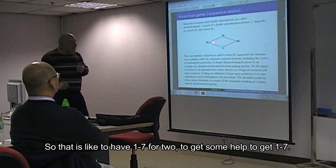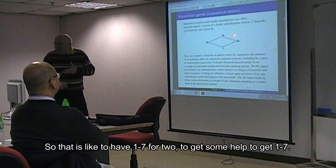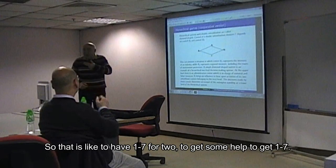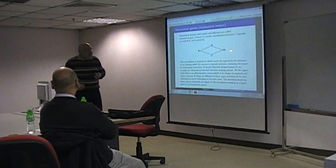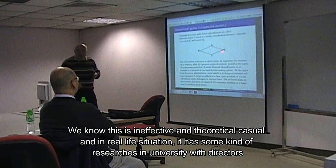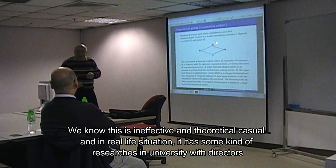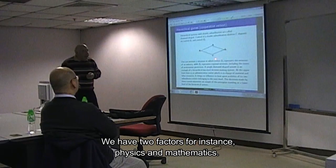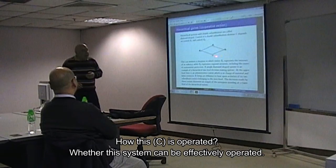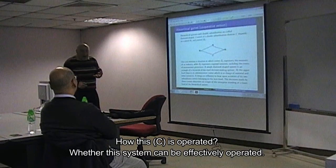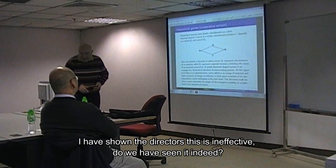This means it is like having one servant for two persons. We know that this is very ineffective, but game theoretical analysis and real life situations have many such things. For instance, in our university, we have a director, two faculties — physics and mathematics — and C, maybe, is the computer center which is controlled by these two faculties. How does this operate? Where can such systems effectively operate? I have shown to our director that this is ineffectual.